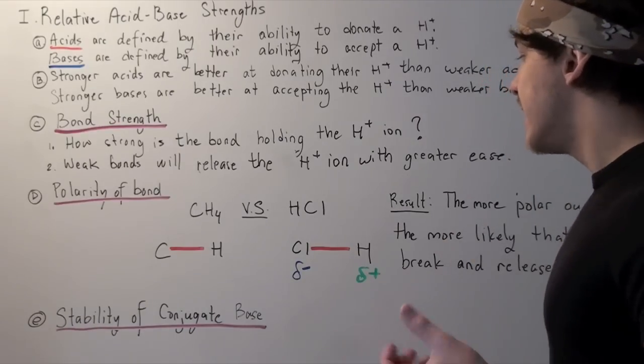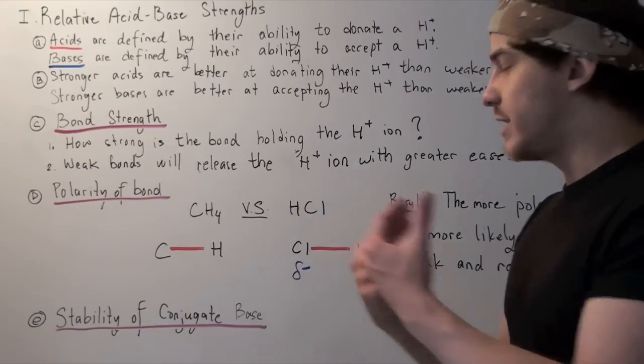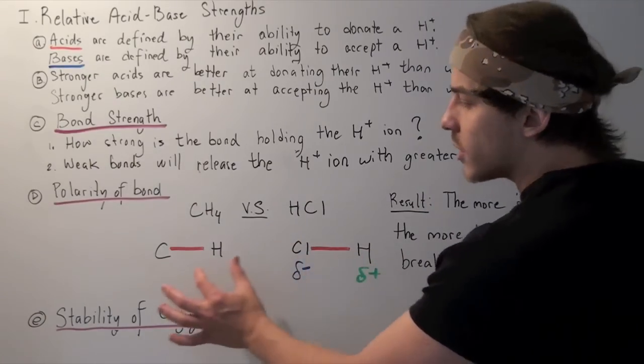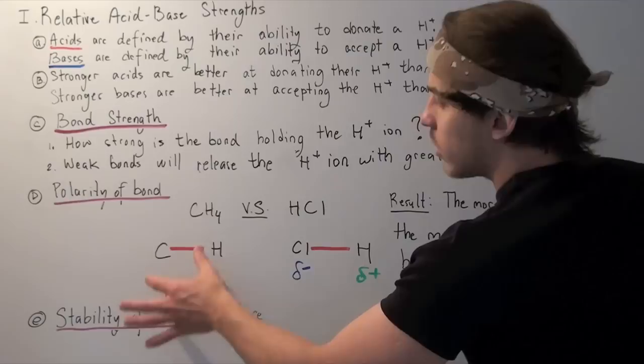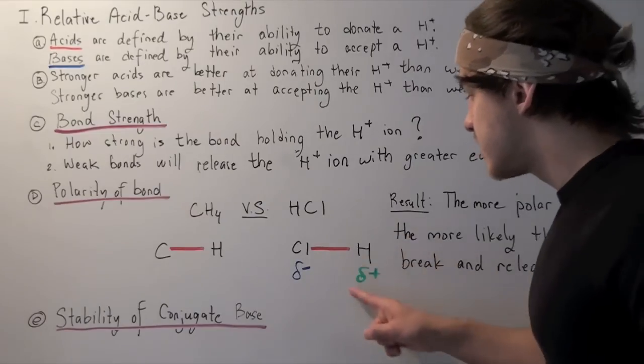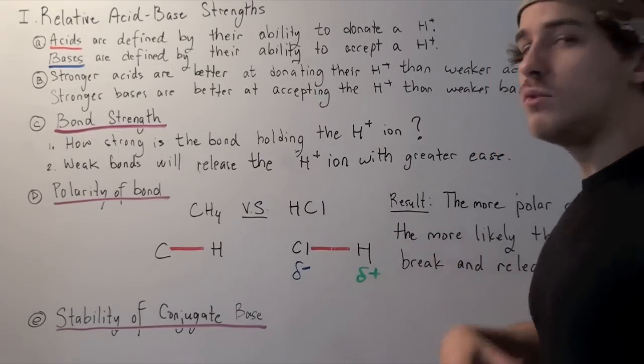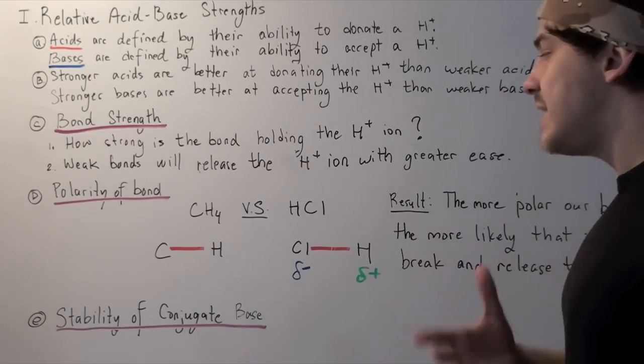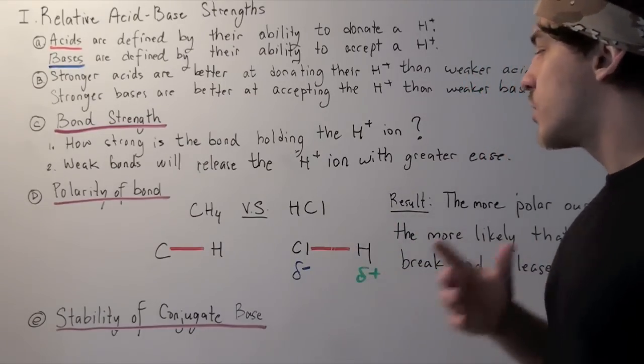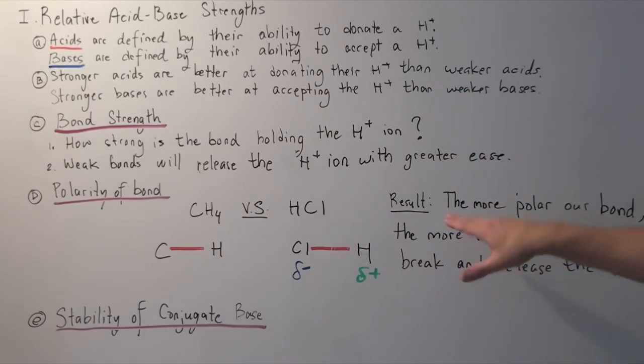That means it's going to pull the electrons toward itself. So the density will not be equal, whereas here it will be equal, or pretty much equal. Therefore, this section of the bond will be weak. And so when a base comes around, it will be able to pull away this H atom with greater ease. Therefore, the more polar our bond, the more likely that it will break and release that H plus ion.